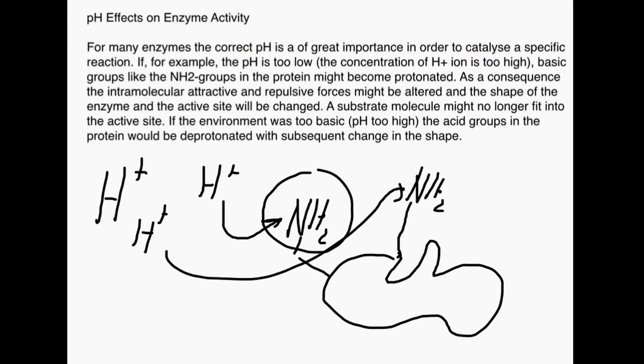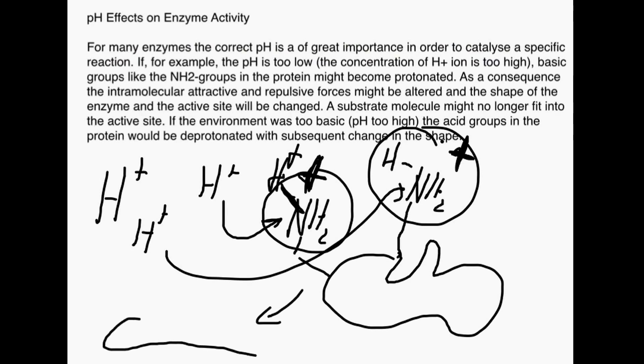When this happens, the neutral amino group with no charge is converted. A proton attaches and the whole group becomes positive. Likewise, another proton attaches here and this group becomes positive. If there are two positive groups next to each other, they repel each other and change the shape of the protein. The amino groups try to get away from each other as far as possible. By adding protons, we change the charges of the amino acid groups in the protein.